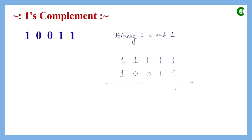Starting from the LSB: one minus one is zero, similarly the next bit gives zero, one minus zero gives one, similarly the next gives one, and the final bit gives zero. This is the one's complement. Looking closely, ones are replaced by zeros and zeros by ones. So without subtraction, we can simply reverse each bit: instead of one put zero, zeros become ones, giving us the one's complement directly.